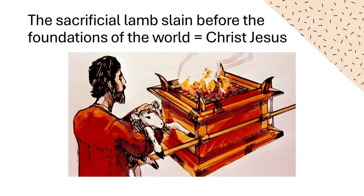We learnt about the brazen altar — the place of blood sacrifice. The brazen altar represented the cross of Calvary, which is our brazen altar. The sacrifice upon the altar, in particular our lamb upon that, was a foretelling of Christ's coming as the lamb of God who would take away the sin of the world.